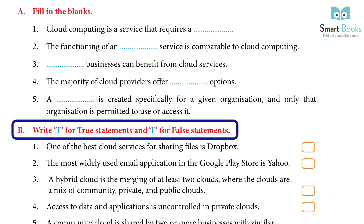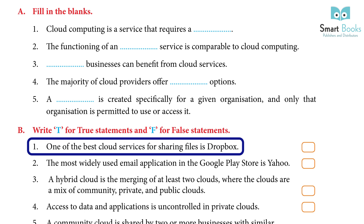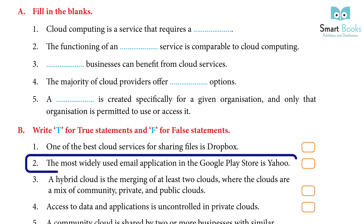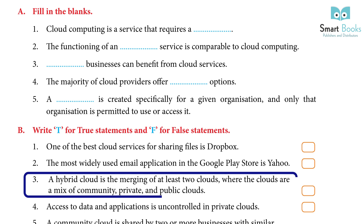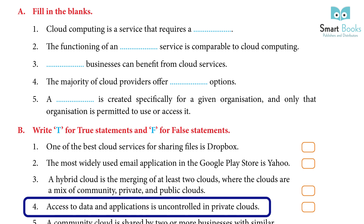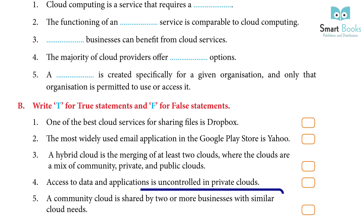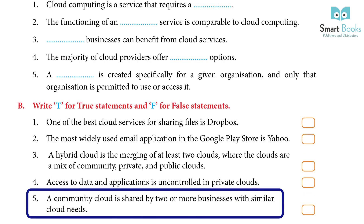B. Write T for True and F for False: 1. One of the best cloud services for sharing files is Dropbox. Answer: True. 2. The most widely used email application in the Google Play Store is Yahoo. Answer: False. 3. A hybrid cloud is the merging of at least two clouds, where the clouds are a mix of community, private, and public clouds. Answer: True. 4. Access to data and applications is uncontrolled in private clouds. Answer: False. 5. A community cloud is shared by two or more businesses with similar cloud needs. Answer: True.